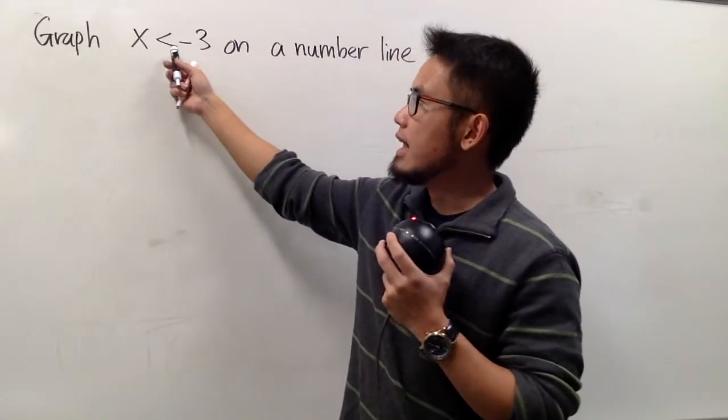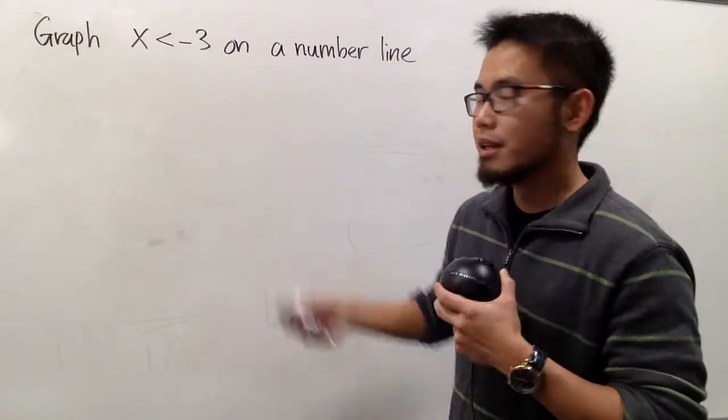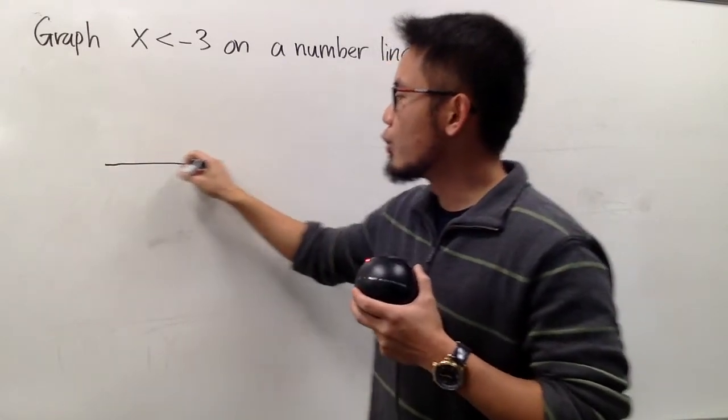Okay, we are going to graph the inequality x is less than negative 3 on a number line. So we are just going to go ahead, draw our number line like this.